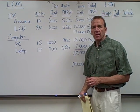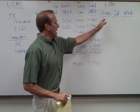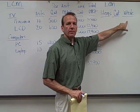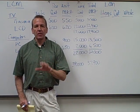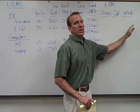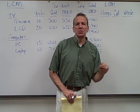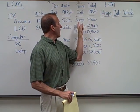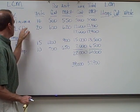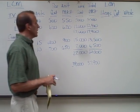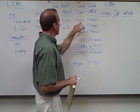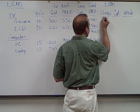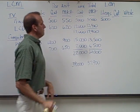Now we need to apply Lower of Cost or Market in three different ways: by item, by category, and by the whole inventory. In a real-life situation you'd use just one method, but I'm showing you all three. For the item method, we look at each item individually. For plasma TVs, the cost ($5,000) is lower than the market ($5,500), so we use $5,000.